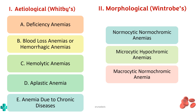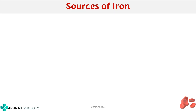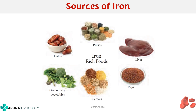The different dietary sources of iron include pulses, liver, ragi, cereals, green leafy vegetables, and dates.